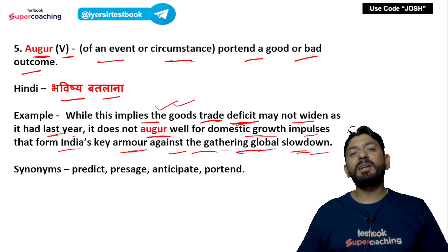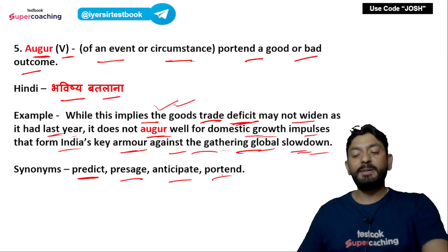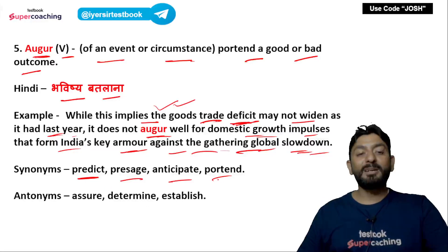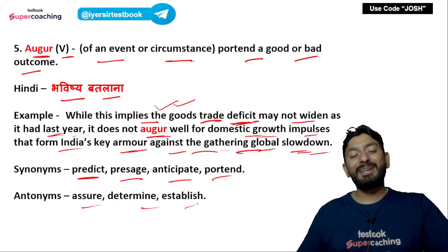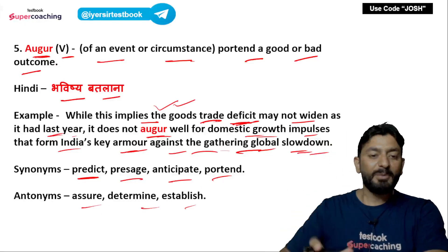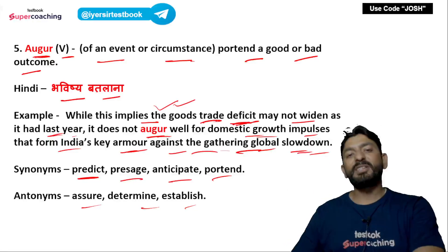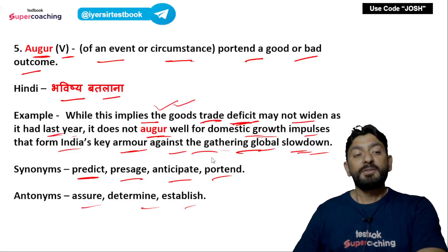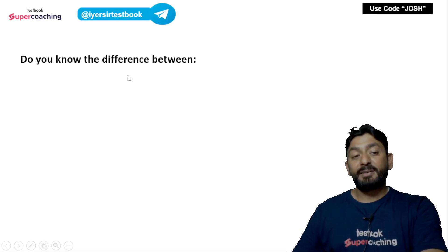Antonyms of 'augur': assured, determined, established — किसी चीज की पक्के तौर पे assurance देना, present में भविष्यवाणी का antonym — that is the closest opposite word. So that is the meaning of augur.